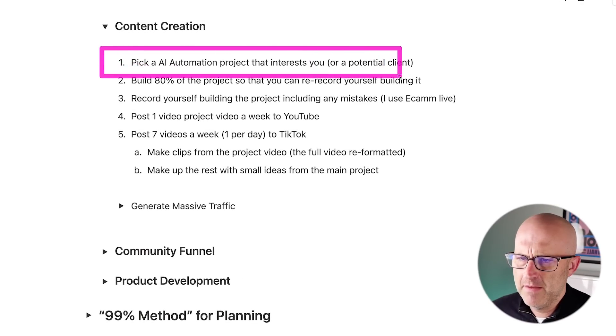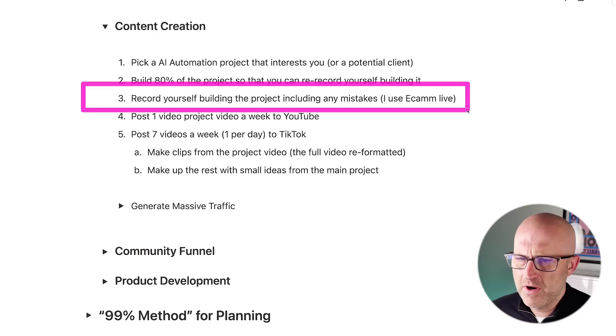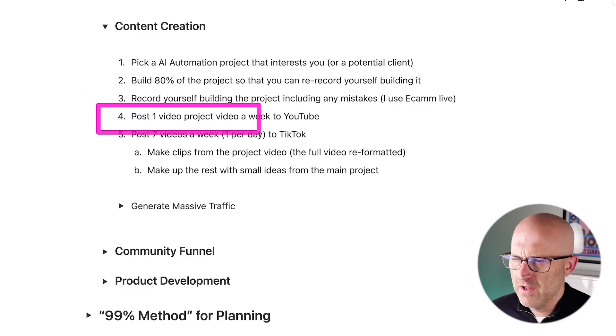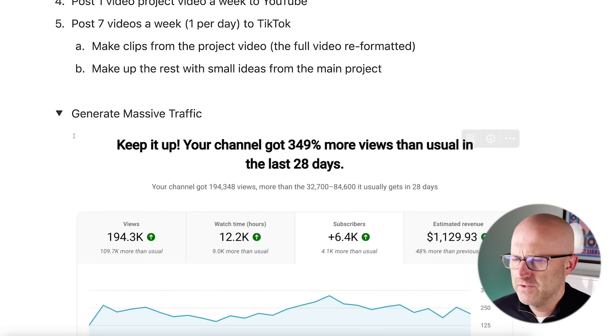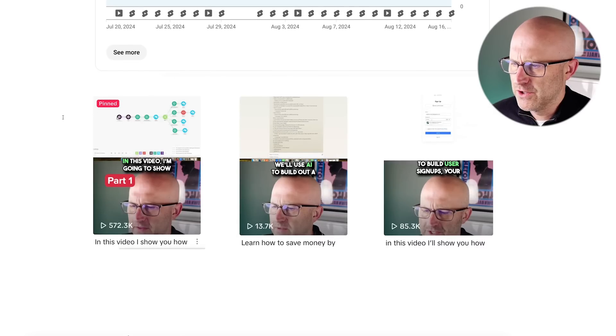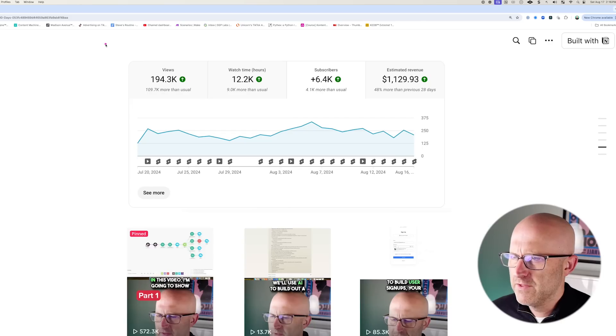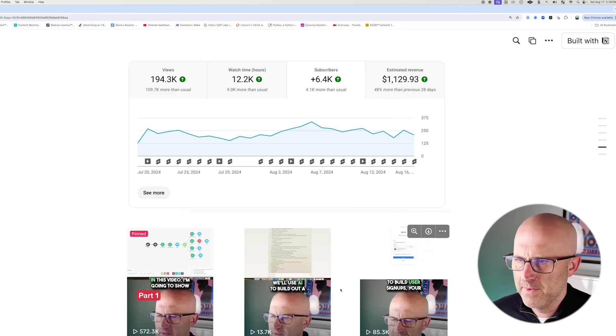So I keep things really simple by just picking a project that interests me. And then I actually build it. And then I record myself rebuilding that project with Ecamm Live to produce the one main video for YouTube and the seven videos that I need for TikTok each week. And this simple process allows me to generate a ton of traffic from my YouTube channel. I'm growing faster than I ever have before. And the channel itself is helping generate monthly revenue. And like I said, these 30 minute TikToks are blowing up. Everyone thinks of TikTok as the sub one minute video, but these 30 minute videos are performing extremely well on my TikTok channel. And so even though I publish content across all the different platforms, it's YouTube and TikTok for me that are performing the best.